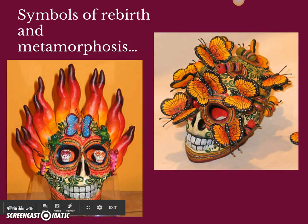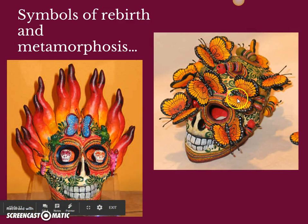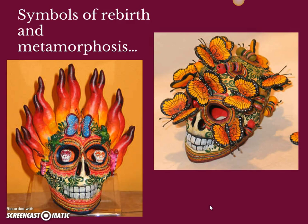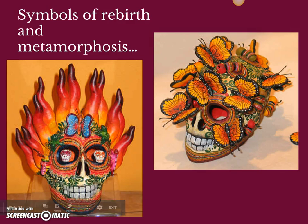One thing I thought was pretty neat is that symbols of rebirth and metamorphosis occur in this celebration. You can obviously see this with the monarch butterflies. What is metamorphosis? A caterpillar goes throughout the life cycle — metamorphosis into a butterfly. You have a pupa, and then through the chrysalis it changes and becomes a beautiful butterfly. So a transition that signifies life and death and then the rebirth of a spirit in a different place.